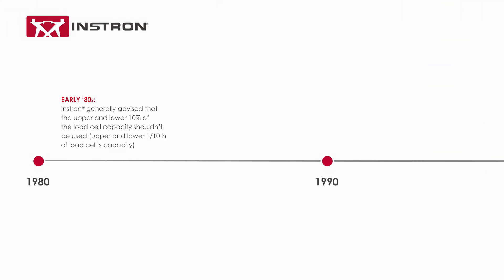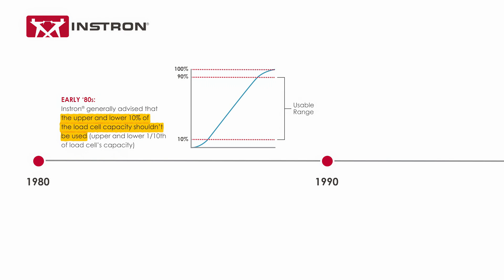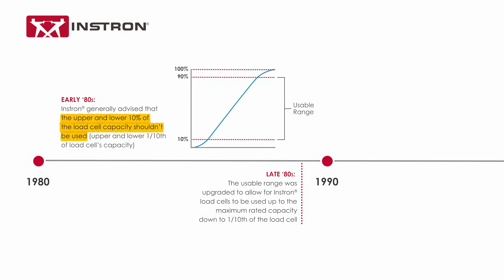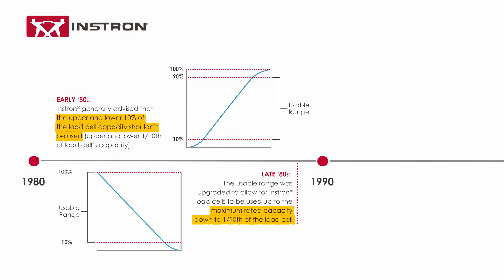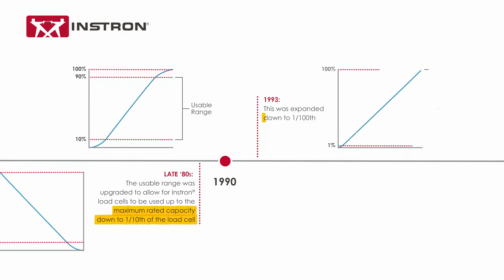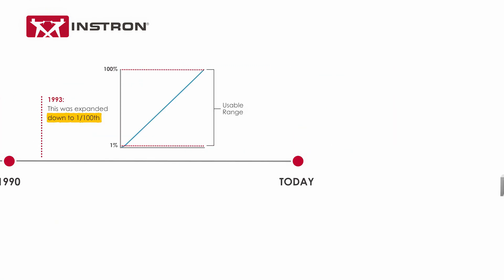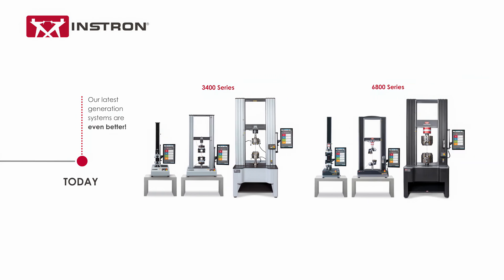In the early 80s, Instron generally advised that the upper and lower 10 percent of the load cell capacity shouldn't be used, meaning the upper and lower one-tenth of load cell capacity. But as the technology in our testing systems improved, this guidance has changed. In the late 80s, the usable range was upgraded to allow for Instron load cells to be used up to the maximum rated capacity down to one-tenth of the load cell. In 1993, this was expanded down to one one-hundredth, and now our latest generation systems are even better.